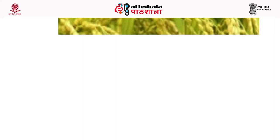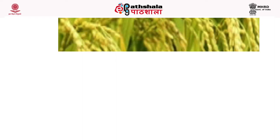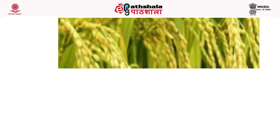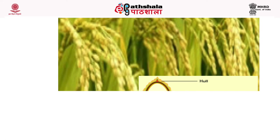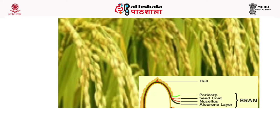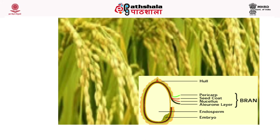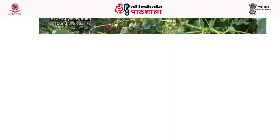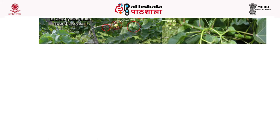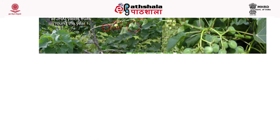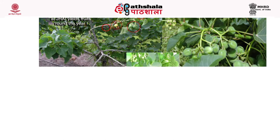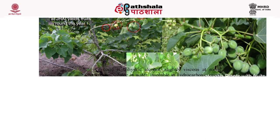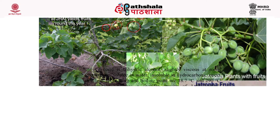Rice crop gives rice bran oil, which is an edible oil but has the potential to be converted into biodiesel. Another non-edible oil comes from jatropha seeds, which contain about 50% oil from the kernel of the jatropha seed. It is non-edible and has great potential for biodiesel production in the country.